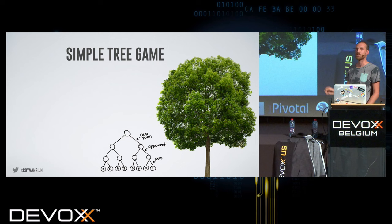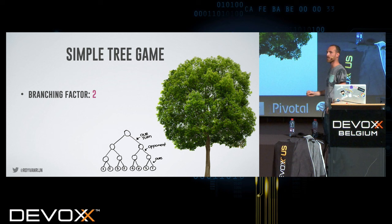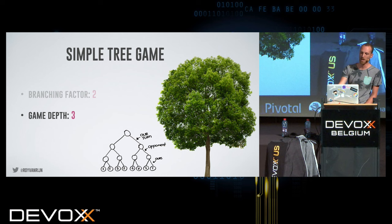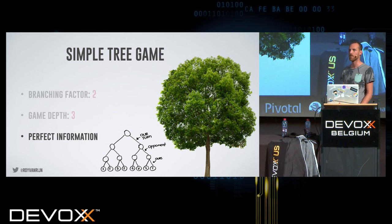This is just an example game. In our simple tree game there are some statistics: a branching factor of 2, because at each point we split into 2. The entire depth of this game is 3. And we have perfect information — both players know the outcome of the evaluation.